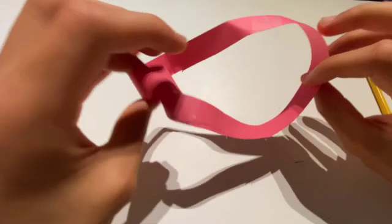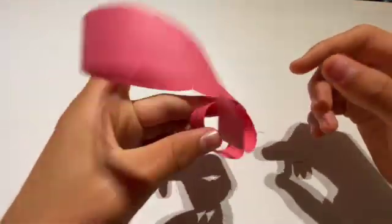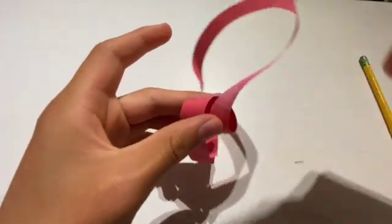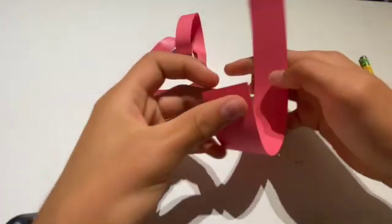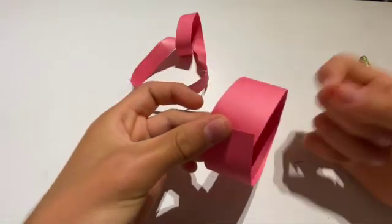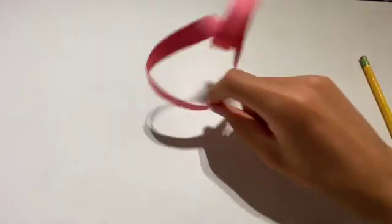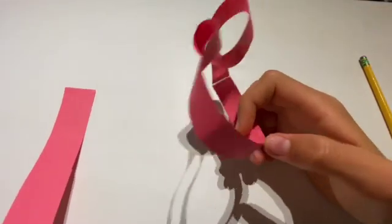And that's pretty cool how we get one loop from, like one complete loop just out of one Mobius. Because if you think about if we took a straight loop here and cut it down the middle, we would have two straight loops, right? But when we cut the Mobius, we get a single one.